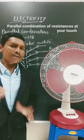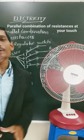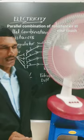You can find the parallel combination of resistances R1, R2, R3 in the regulator switches of your fan. Just let us take an example here.